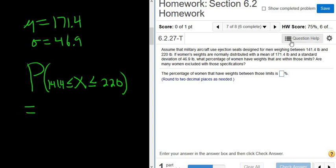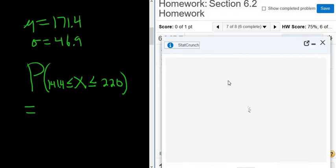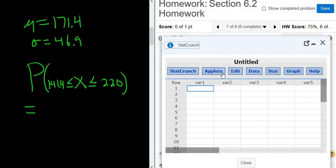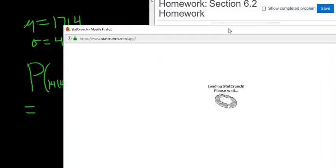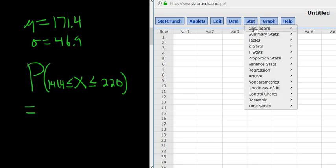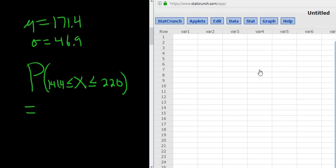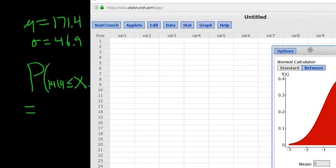So we'll go to StatCrunch. To do that, we'll click on Question Help and then StatCrunch. I'm going to detach this here. And then you go to Stat, Calculators, and then you go to Normal. And there it is.